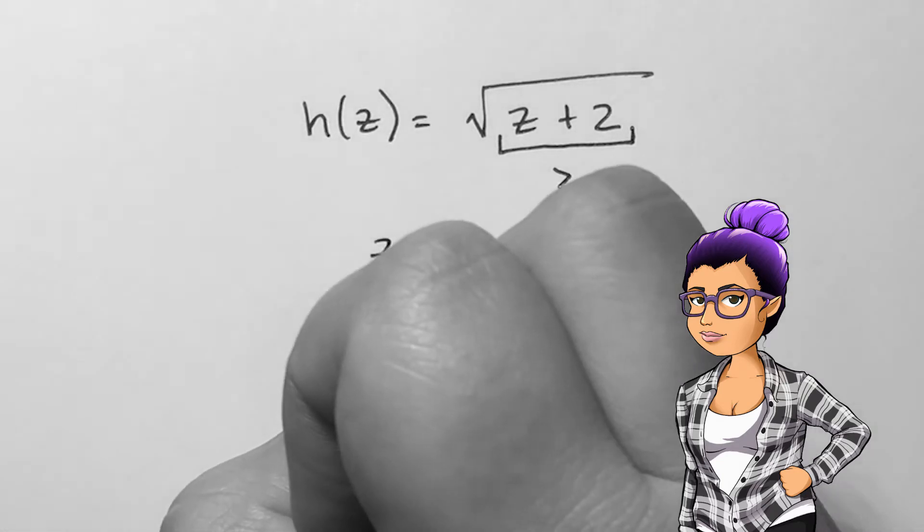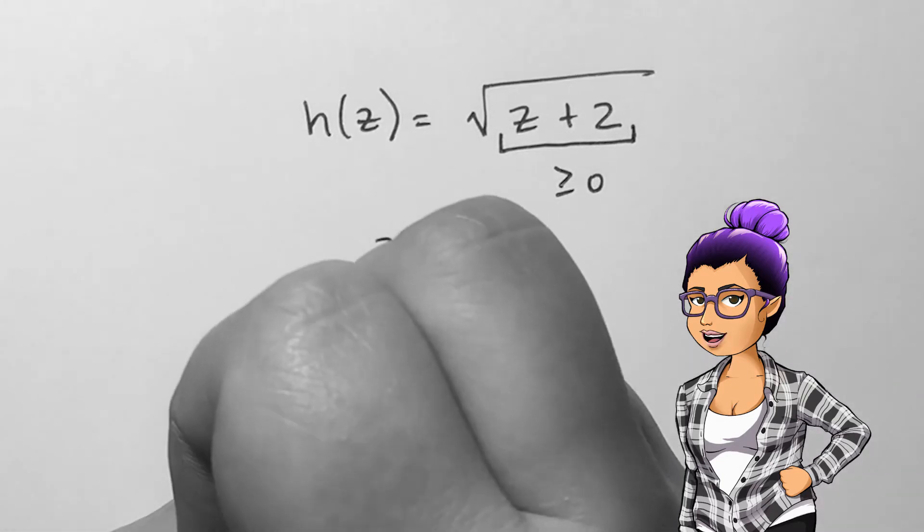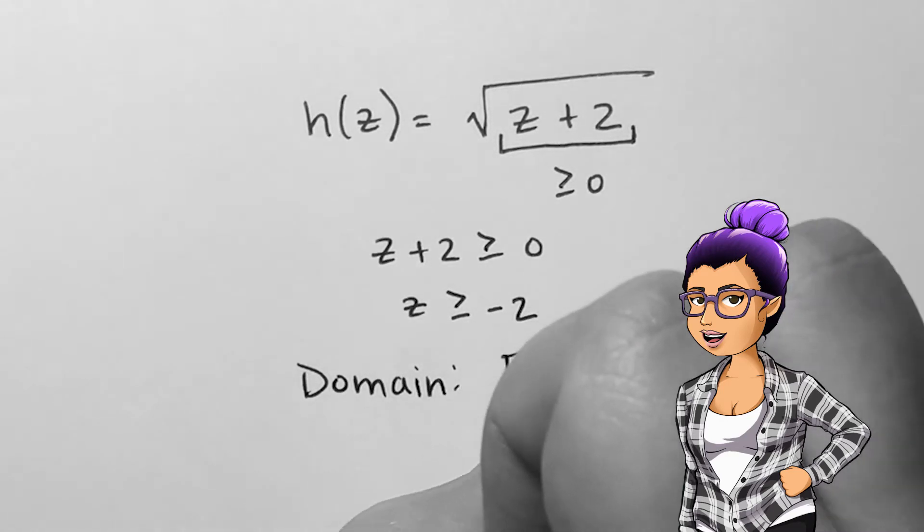In this case, z plus 2 is greater than or equal to 0. Solving for z in this basic inequality would give me a domain of negative 2 included up to infinity.